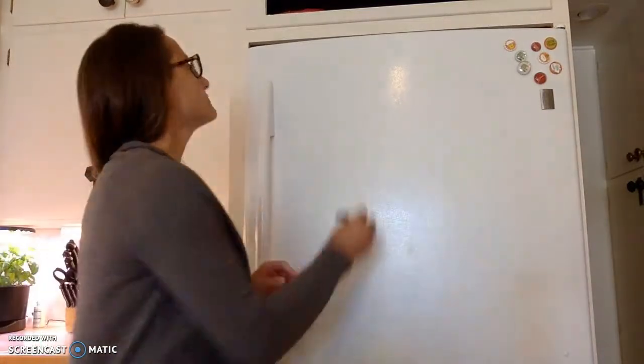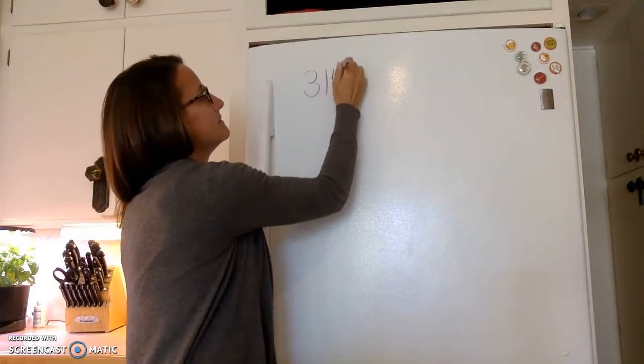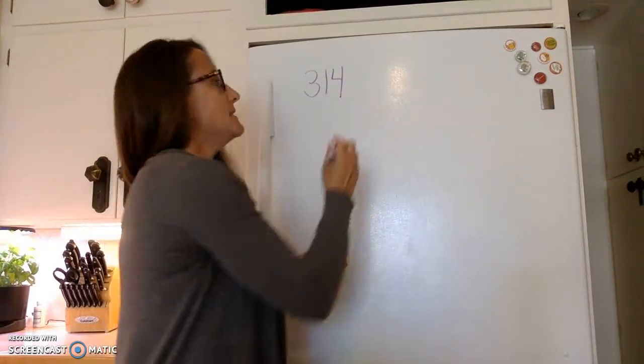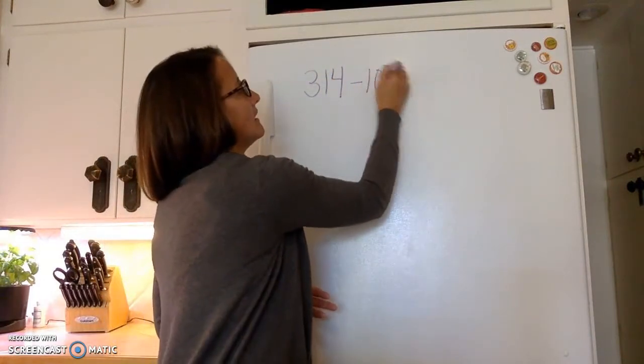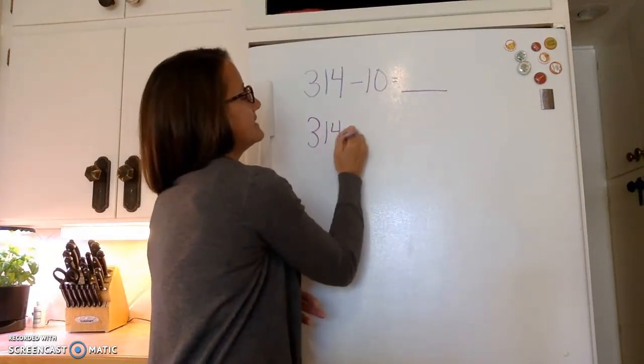The first thing you're going to be doing is subtracting by tens and one hundreds just like you did last week. So let's practice one together. Let's start with the number 314. 314 minus 10 and 314 minus 100.